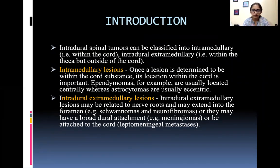Intradural spinal tumors can be classified into intramedullary, that is within the cord, and intradural extramedullary, that is within the theca but outside of the cord. Once a lesion is determined to be within the cord substance, its location within the cord is important. Ependymomas are usually located centrally whereas astrocytomas are usually eccentric. Extramedullary lesions may be related to nerve roots and extend into the foramen, such as schwannomas and neurofibromas, or may have a broad dural attachment like meningiomas, or be attached to the cord as in leptomeningeal metastasis.